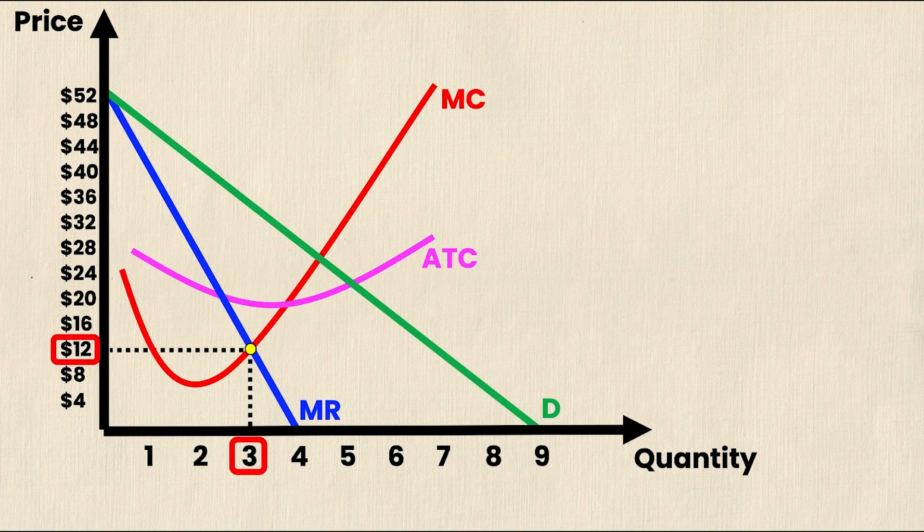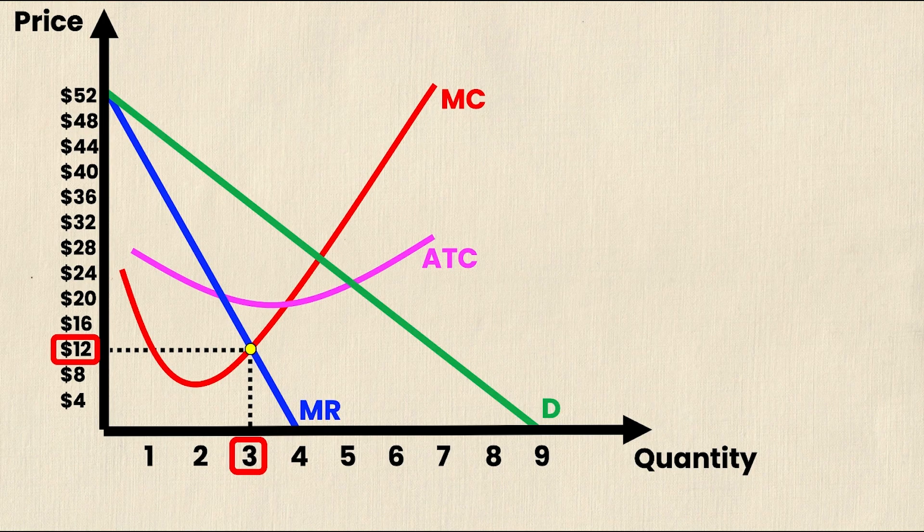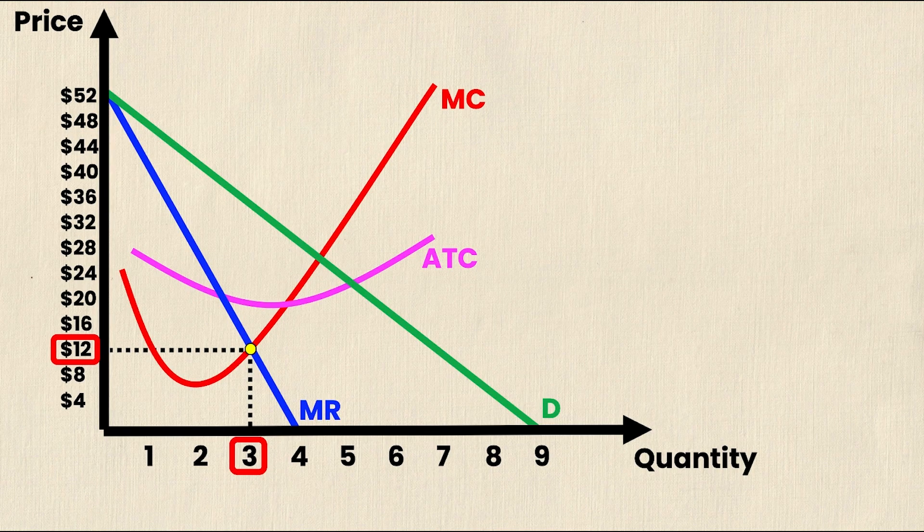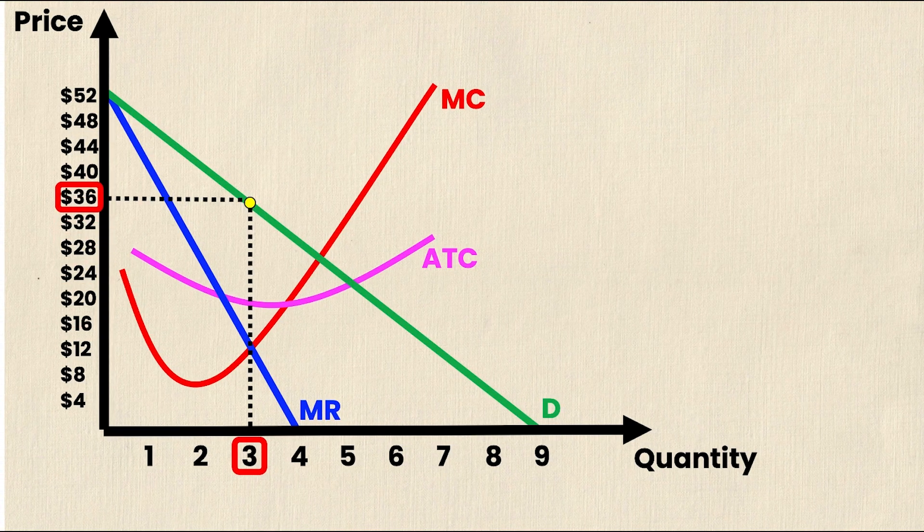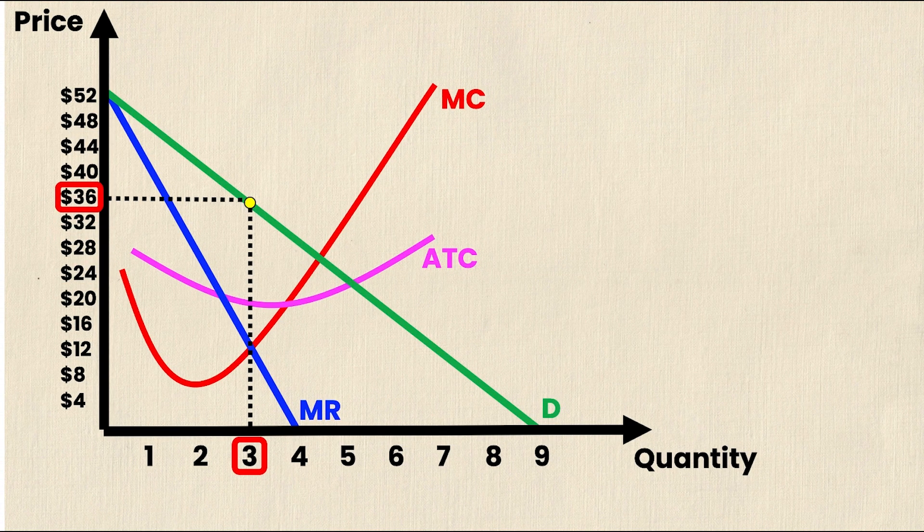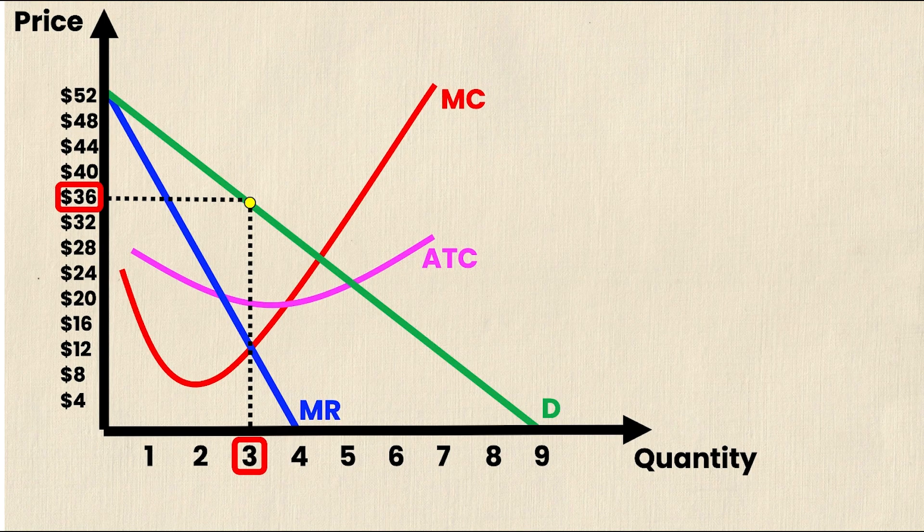But the unique thing about monopoly is they don't actually need to use the socially efficient price of $12. Because they don't have any competition, they can actually inflate their price all the way up to see what market demand is. So they would take quantity of 3, where MC equals MR, and they would follow it all the way up until that intersects with the demand curve. Now you'll notice the price is $36. So they make a significant amount more per unit.